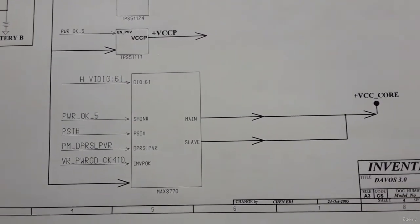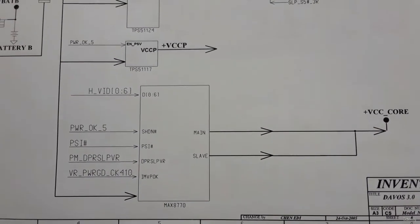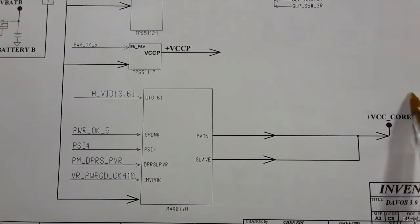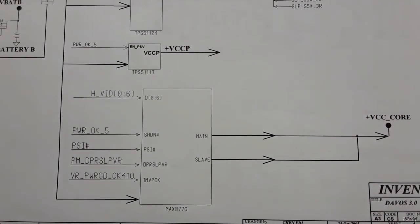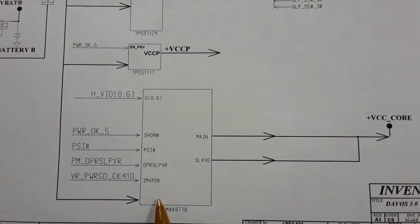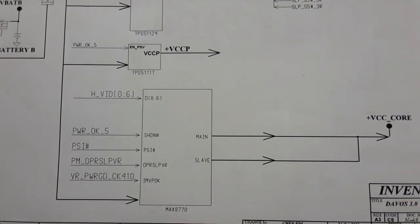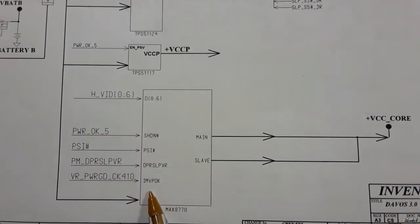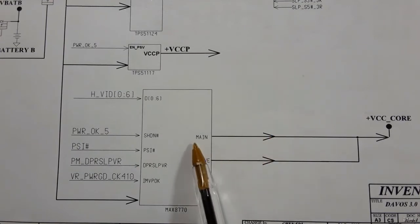V_bat is also applied to the big CPU power management IC. This IC generates V_CCC, which is the main voltage for the CPU. The IC receives 19 volts as its working power. The reference of this IC is MAX8770.